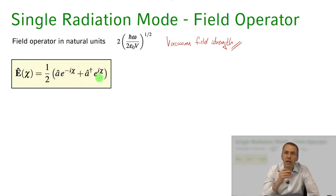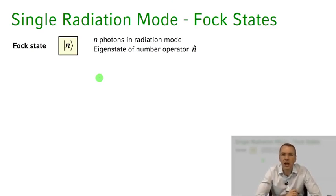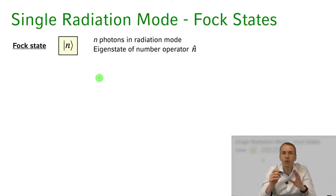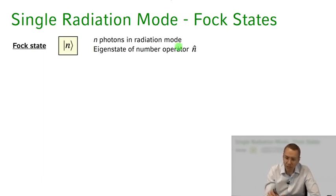Now let's look at distinctive states of the electromagnetic field. The first states we'll discuss are the so-called Fock states — the eigenstates of our harmonic oscillator where we have a defined photon number: n photons in the mode of the electromagnetic field. Equivalently, we can say this is the nth degree of excitation of the harmonic oscillator attached to that mode. So we have n photons in the radiation mode, and this is an eigenstate of the number operator.